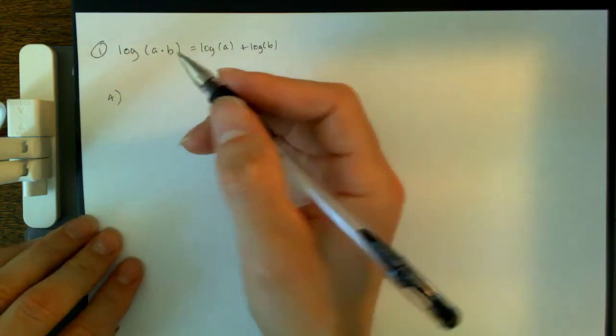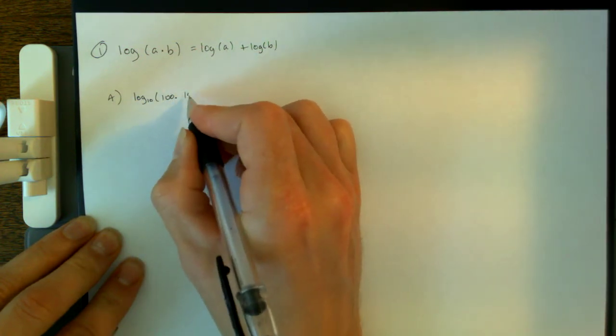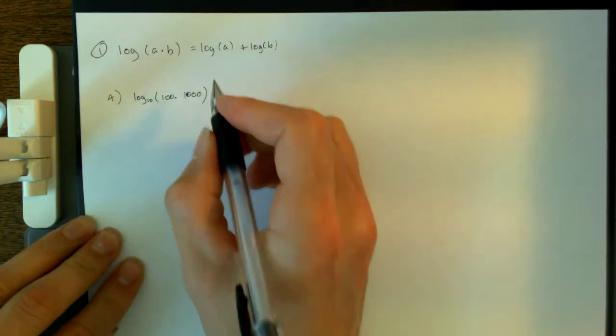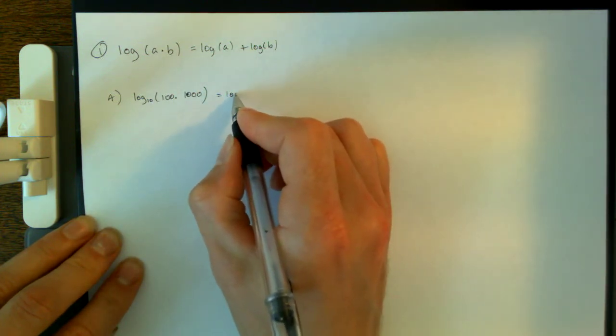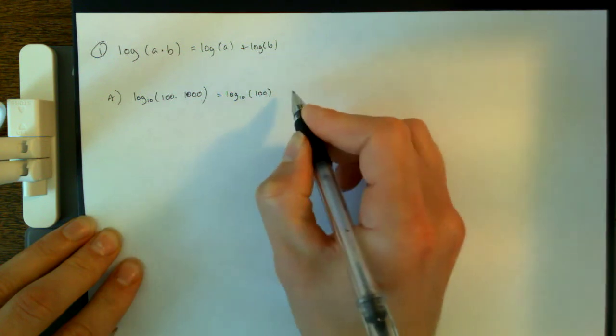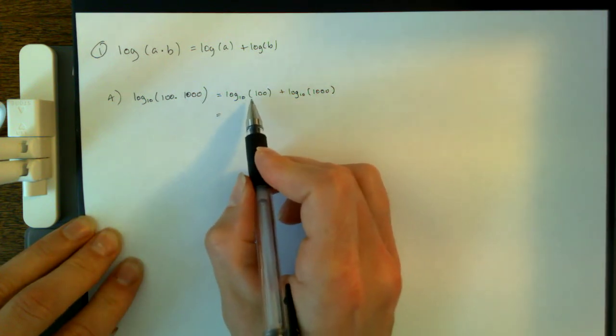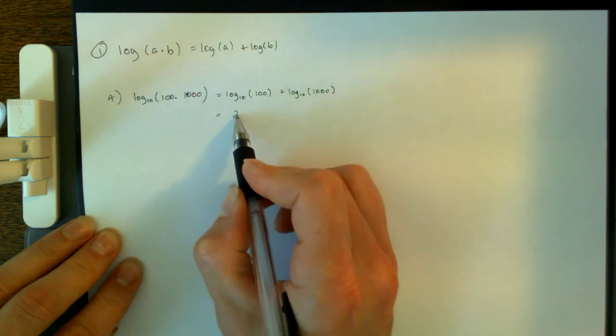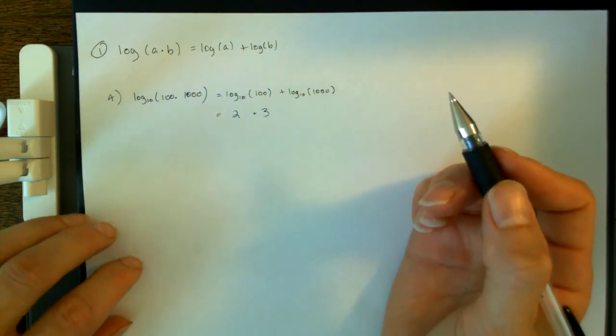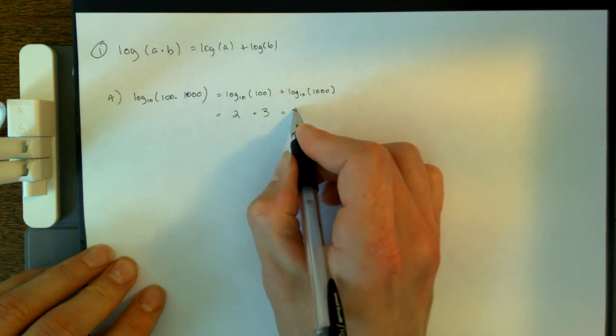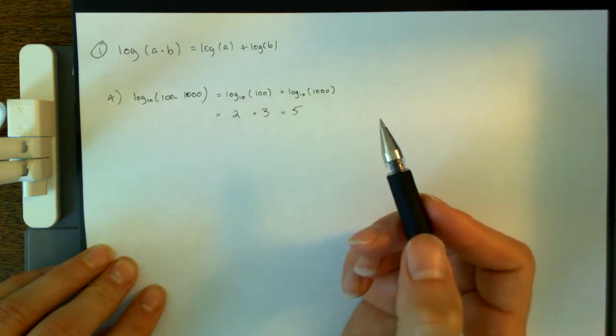So let's just see a couple of examples of this. Example a right here, let's try this, log base 10 of 100 times 1,000 right there. Well, according to our rule up here, that if I have the logarithm of the product, it's the sum of the two individual logarithms. This is equal to log base 10 of 100 plus log base 10 of 1,000. And this is asking, what power do I have to raise 10 to to get 100? And that answer is 2. What power do I have to raise 10 to to get 1,000? That number is 3 because 10 to the third power, 10 times 10 times 10 gets you 1,000. So that means this number is 5.